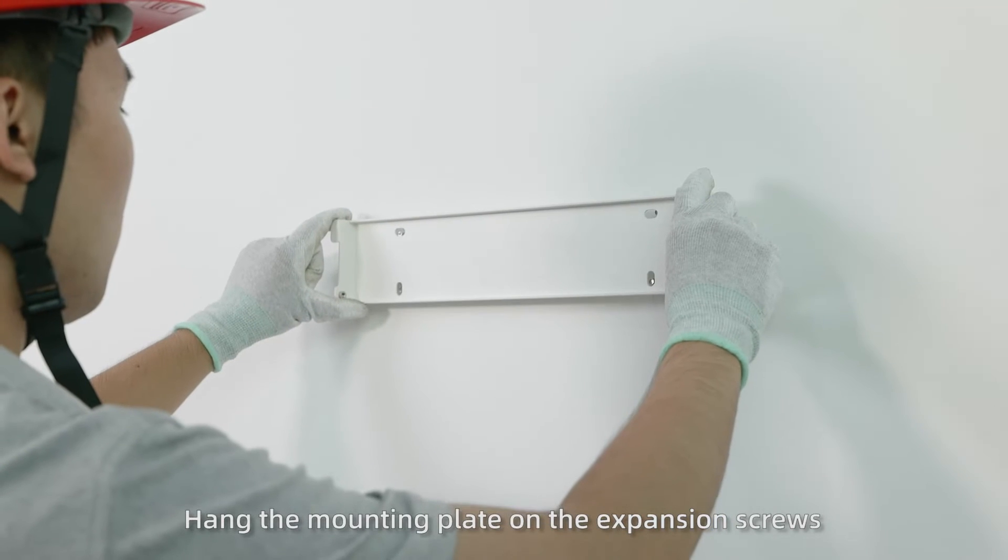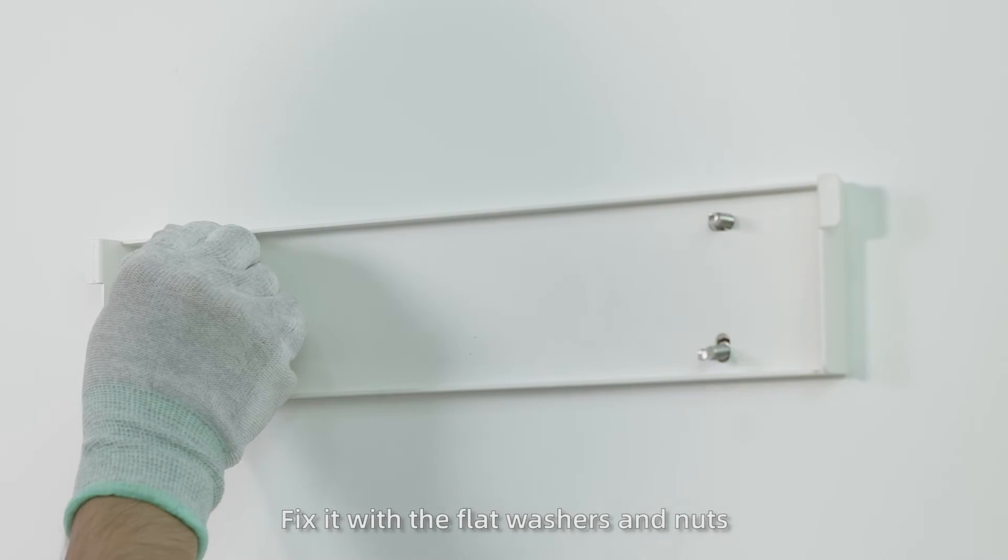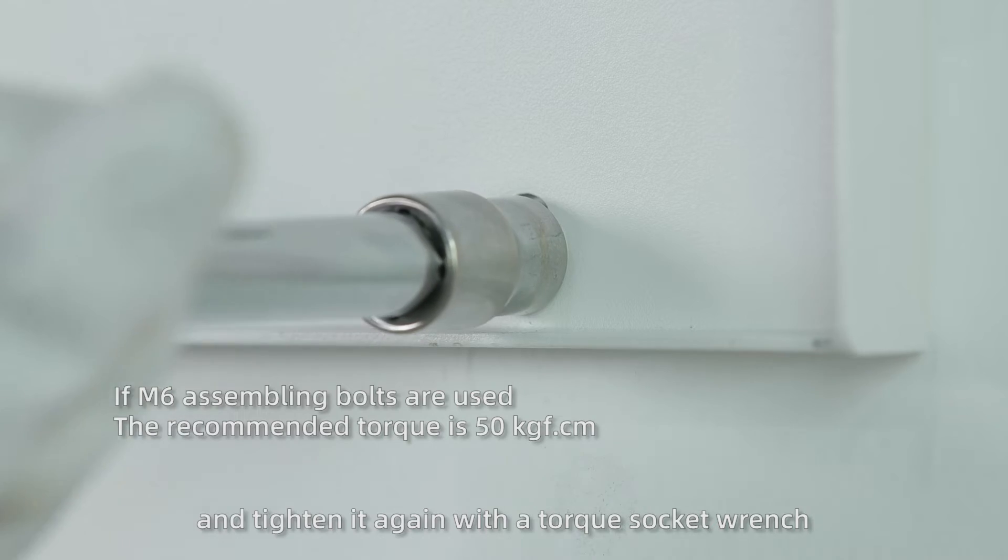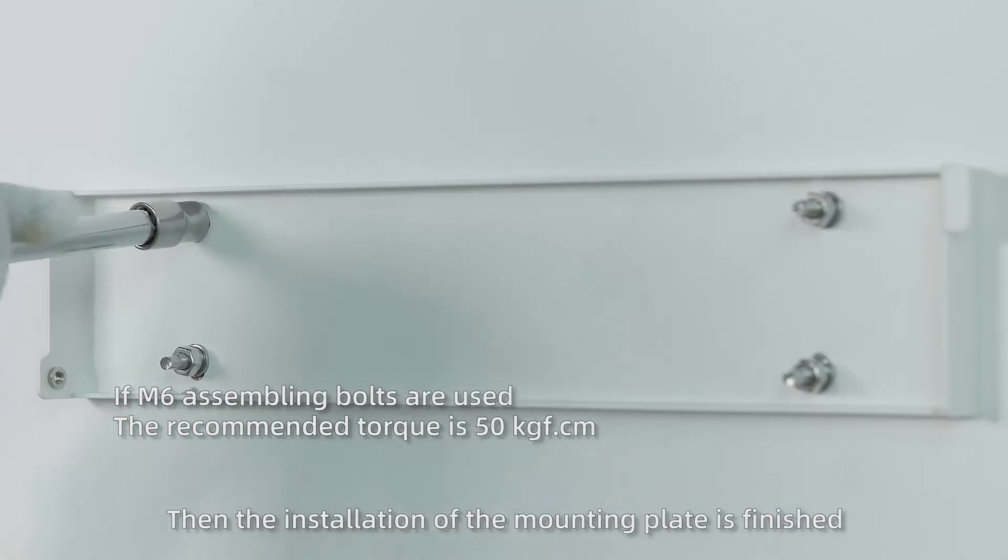Hang the mounting plate on the expansion screws, fix it with the flap washers and nuts, and tighten it again with a torque socket wrench. Then the installation of the mounting plate is finished.